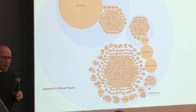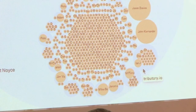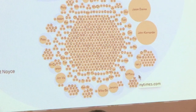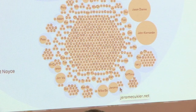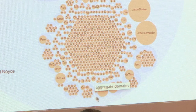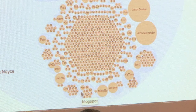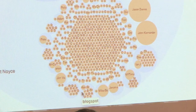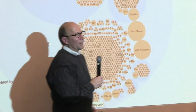Jason Davies has 71 visualizations on his own website. John Curemander — this is dimple.js — he's building business analysis applications on D3, which is interesting. This is Tributary. Let's give a shout-out to Ian and the New York Times, which is the source of many collaborations. Even blockspot has 16 visualizations on here.